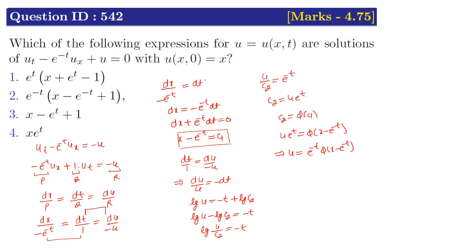Now substituting the initial condition u(x, 0) = x, we set t = 0: x = φ(x − 1). To find φ, let T = x − 1, so x = T + 1. This implies φ(T) = T + 1.